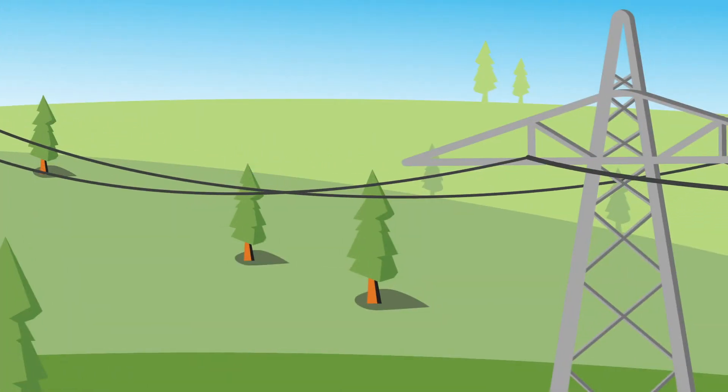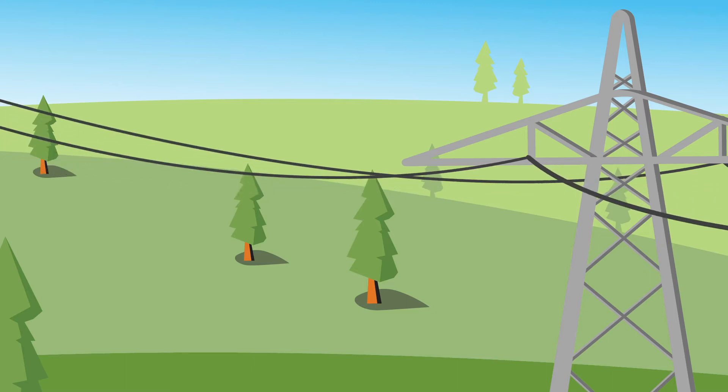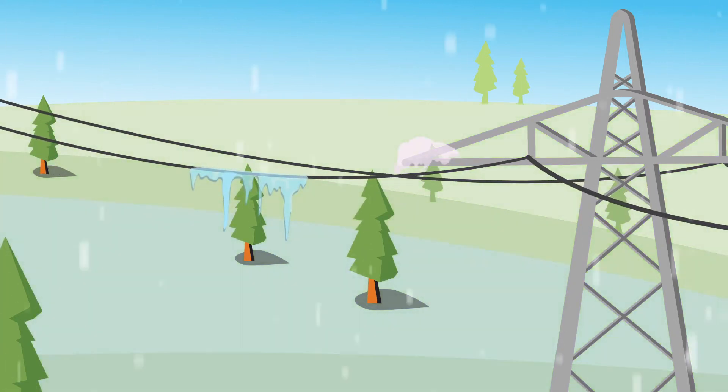Galloping lines can happen in any season, but they're most common when there's a heavy buildup of freezing rain, ice, or frost.